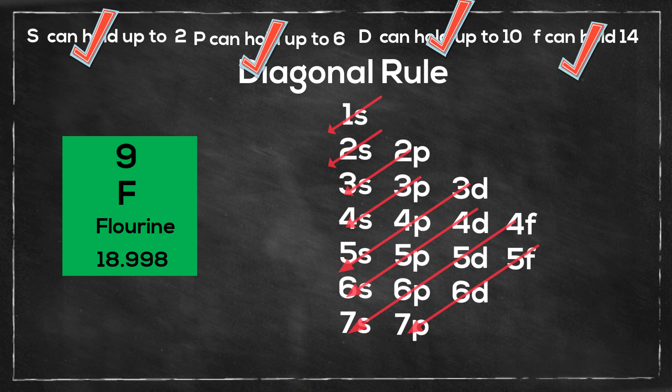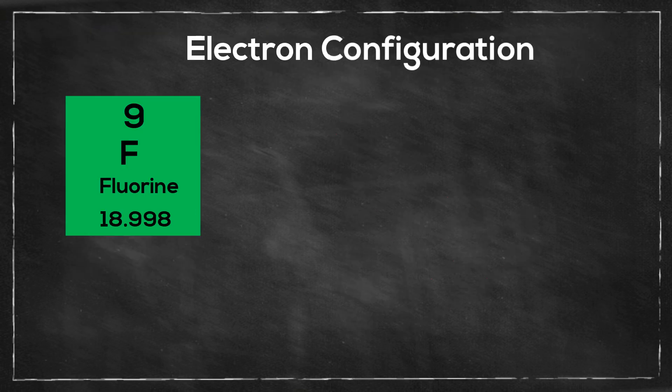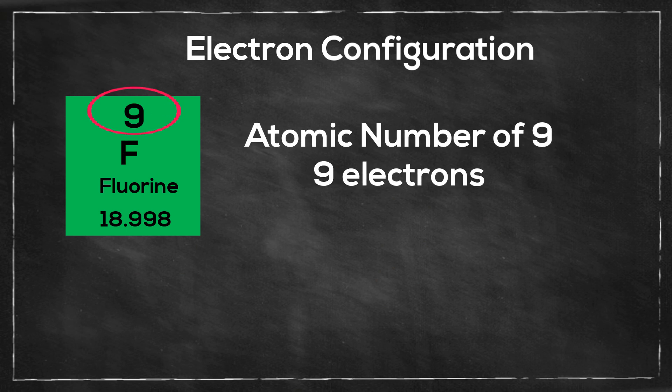Now I need to find out how many electrons fluorine has. Fluorine has an atomic number of 9, so fluorine will have 9 electrons.